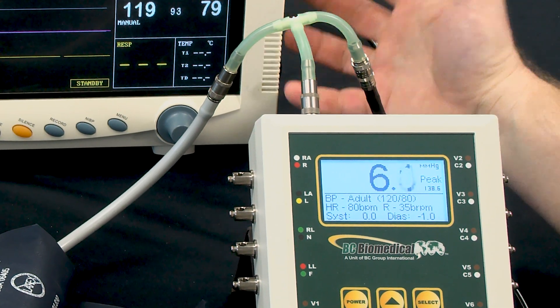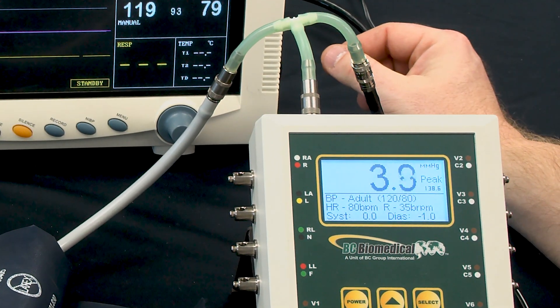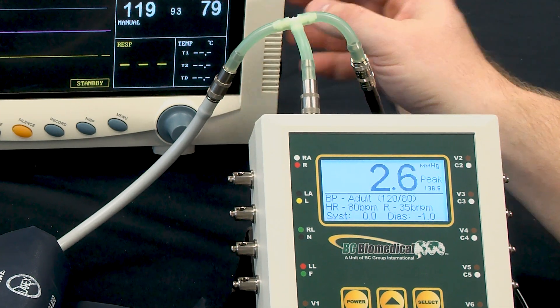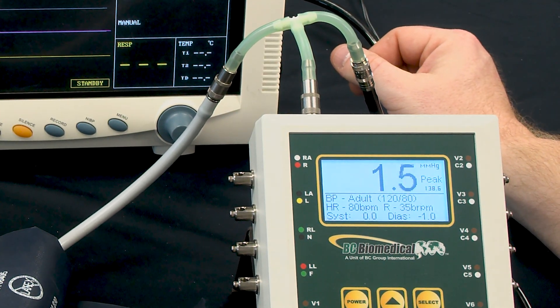And in this case, we can see that the measurement adjusted by two. So maybe we would set that to minus a half if we want to get that to exactly 120 over 80. So that concludes the basic features of the NABP 1040 and NABP simulation.